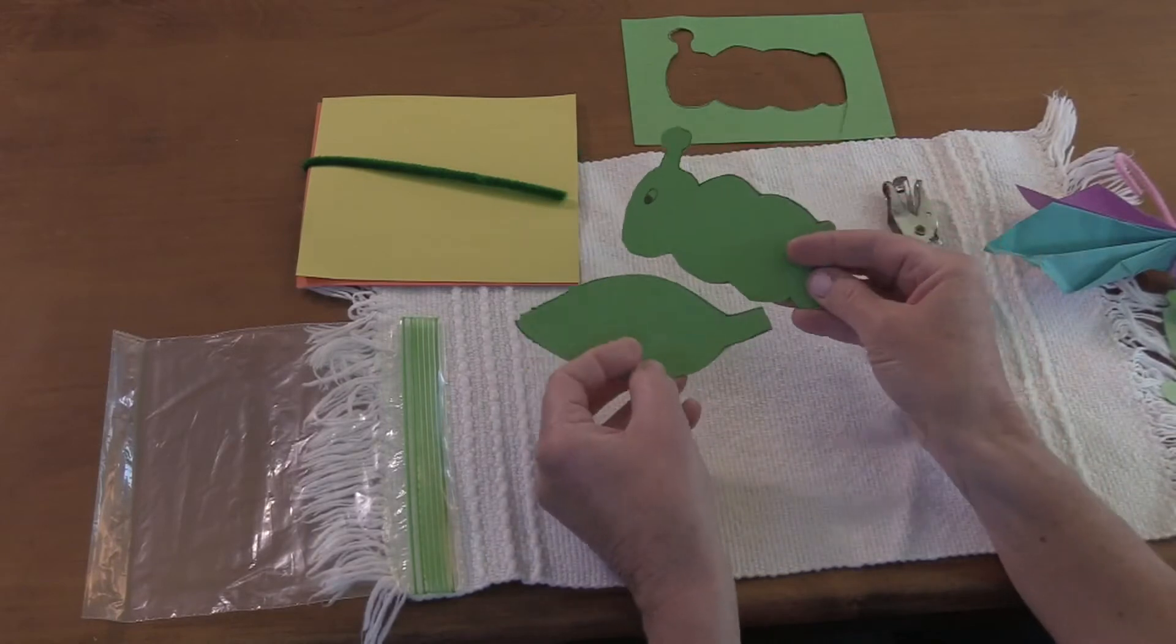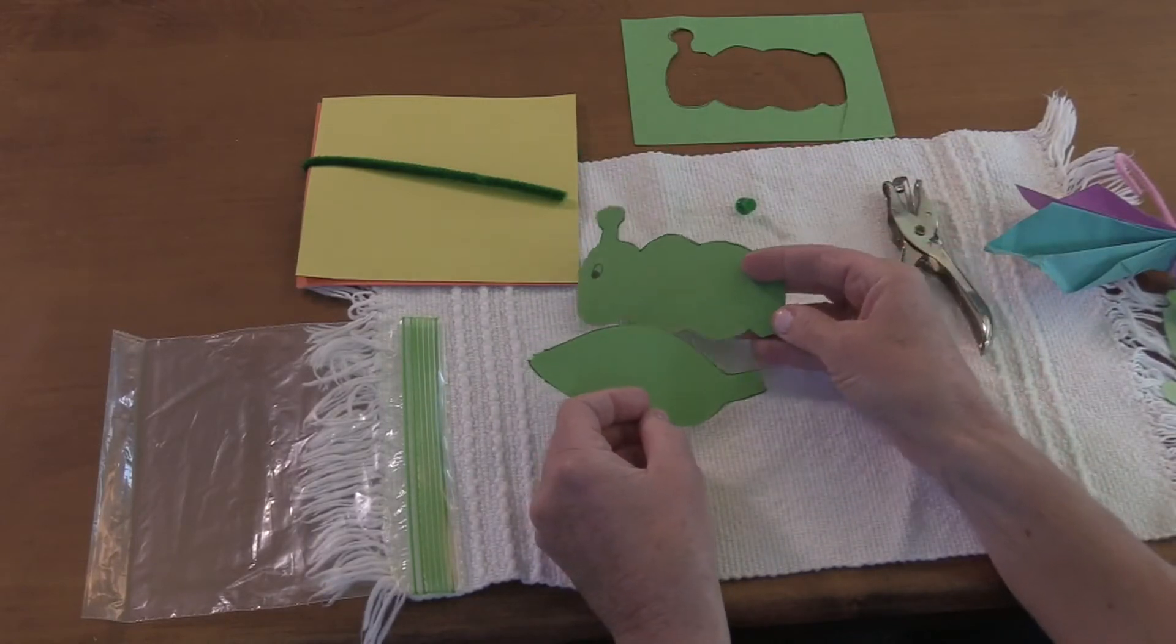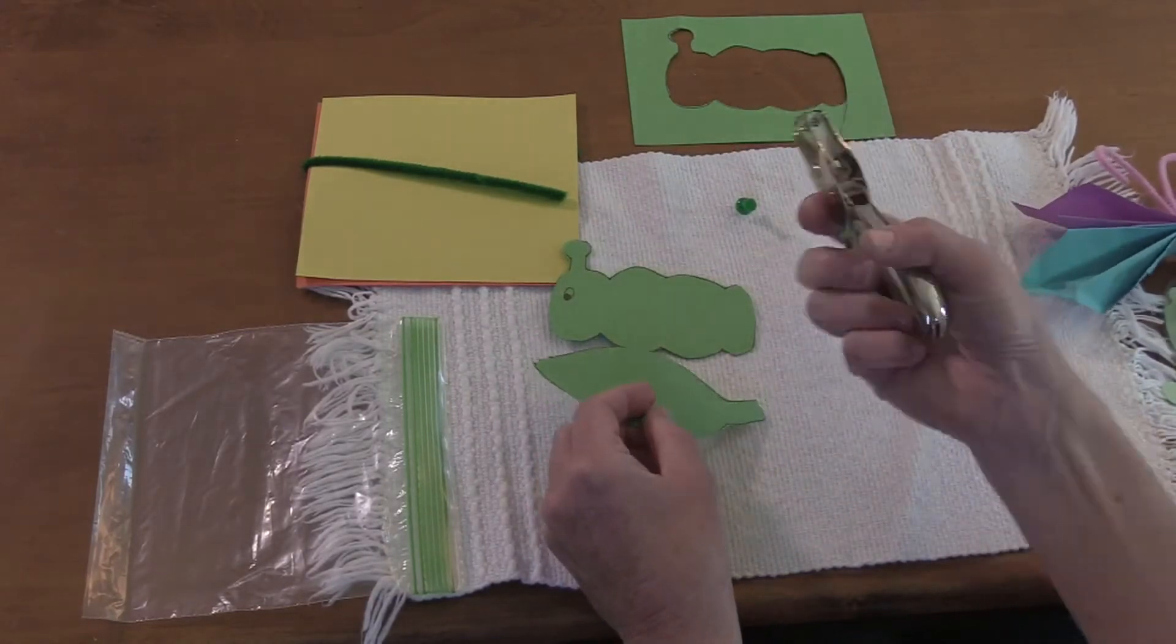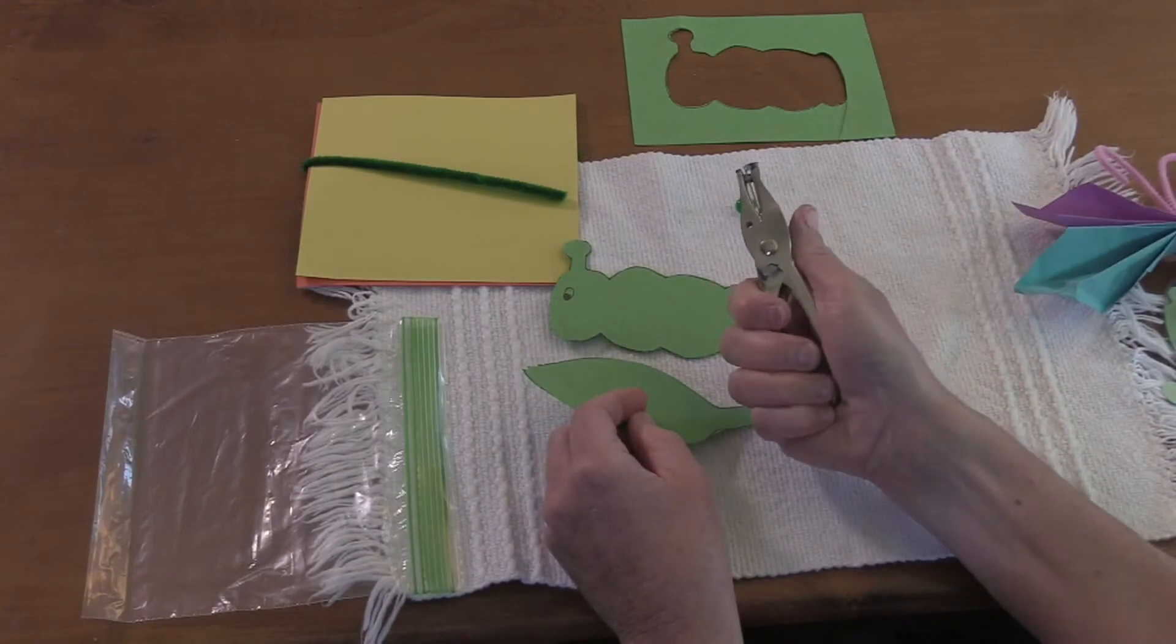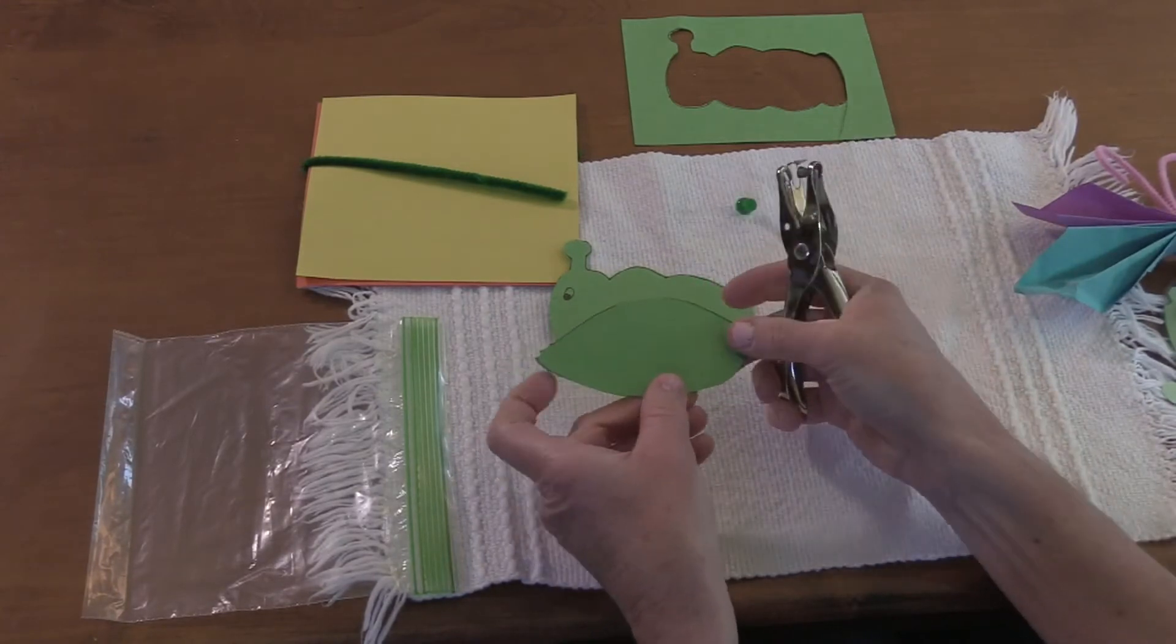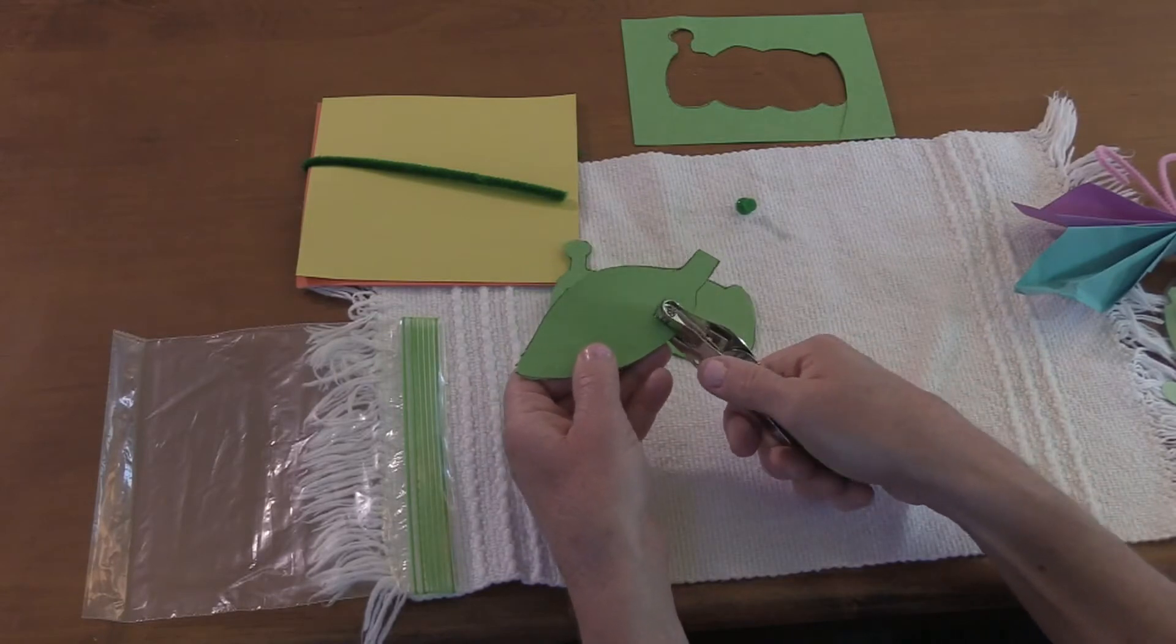So now to show that the caterpillar has been hungry and eaten the leaf, we're going to take a hole puncher and the hole puncher works by squeezing it. So we're just going to make some holes in our leaf.